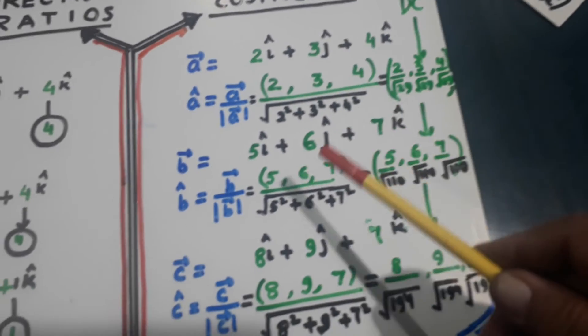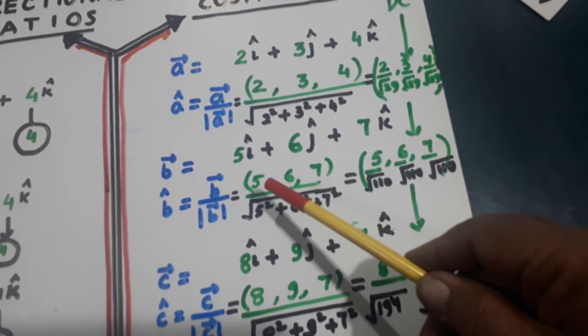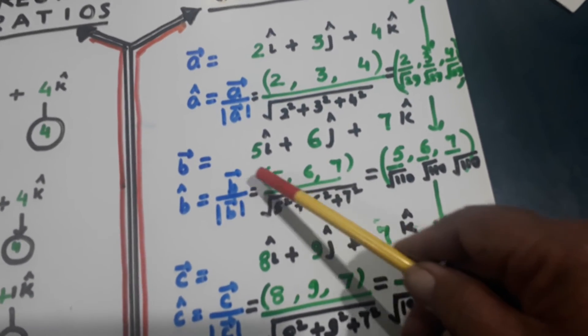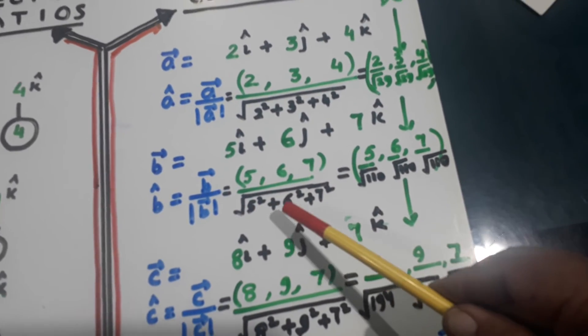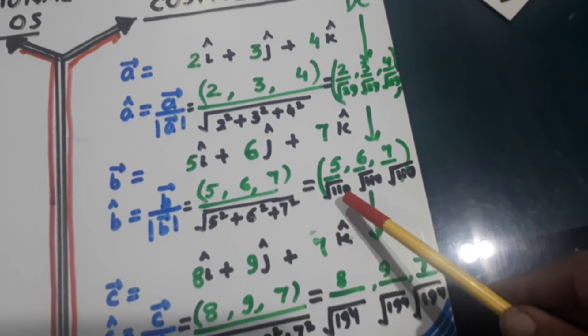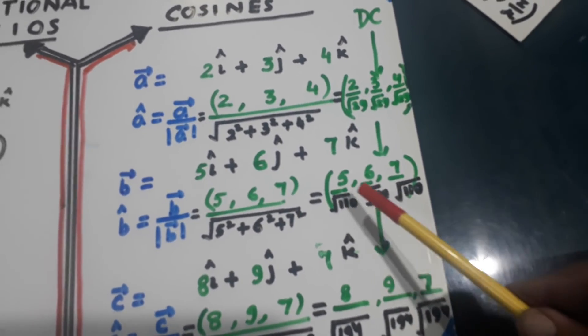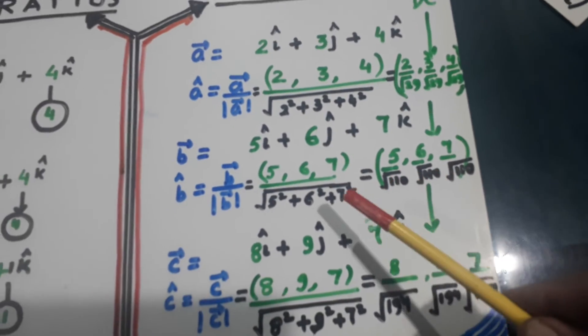Similarly, 5, 6, 7, they are the doctors. Divided by the magnitude, they are the components of the vector. And divided by magnitude, 5 square, 6 square, 7 square, it becomes 110, root 110. So 5 over root 110, 6 over root 110, 7 over root 110, they become DCs.